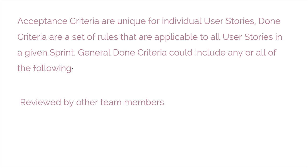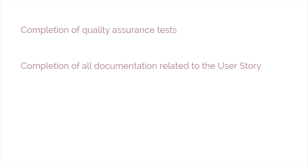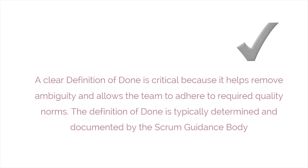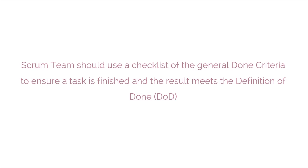General done criteria for user stories can include: completed user stories to be reviewed by team members other than those who developed them; completion of unit testing; completion of quality assurance tests; completion of all documentation related to the user story; all issues are fixed; and successful demonstration of the completed user story to stakeholders and/or business representatives. A clear definition of done is critical because it helps remove ambiguity and allows the team to adhere to required quality norms. The definition of done is typically determined and documented by the scrum guidance body, and the scrum team should use a checklist of the general done criteria to ensure a task is finished and the result meets the definition of done.